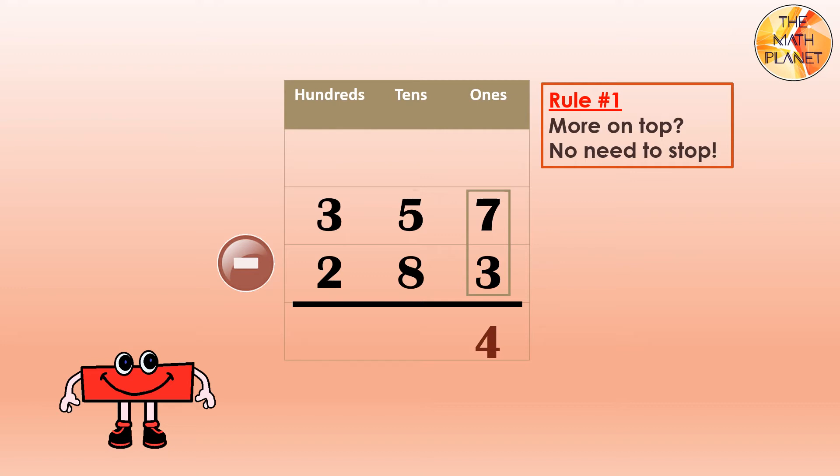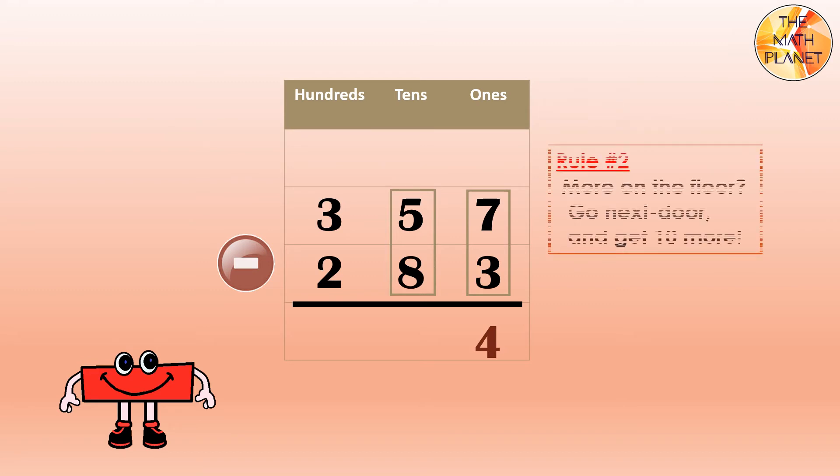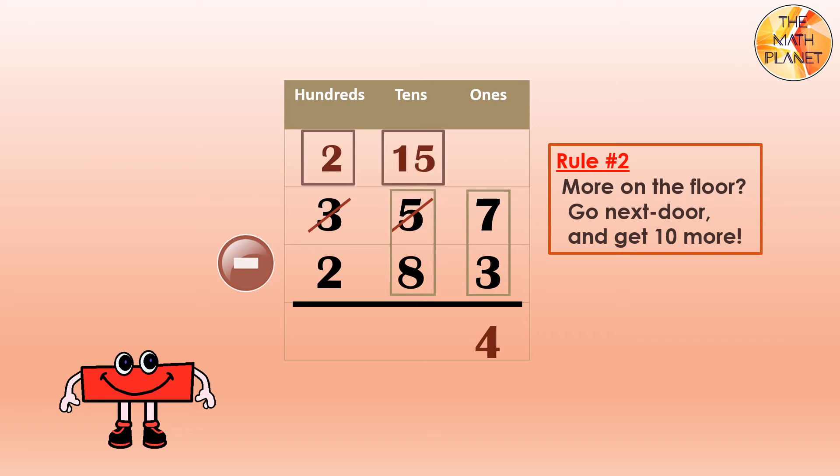Next we subtract the tens. 5 minus 8. Is there more on top here? No. There is more on the floor, so this is rule number 2. More on the floor, go next door and get 10 more. Cross the 5 tens and cross the 3 hundreds. The hundreds will be 2 and the tens will be 15. Once you're done regrouping, you can take away 8 from 15 tens. 15 minus 8 equals 7.